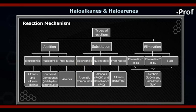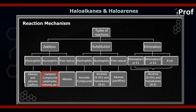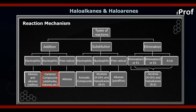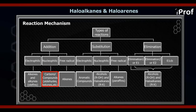After alcohols, we have aldehydes, ketones, and carboxylic acids, along with derivatives of carboxylic acids: acid chloride (RCOCl), esters (RCOOR'), anhydrides (RCOOCOR'), and amides (RCONH2). All these compounds have a C=O group — the carbonyl group — so all of them show nucleophilic addition reaction.